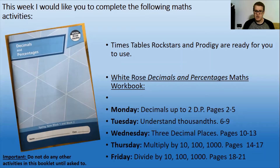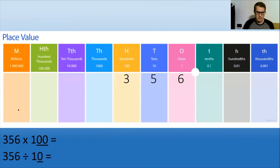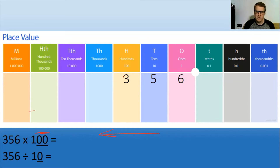For Thursday and Friday we're going to be multiplying and dividing fractions and decimals. I just want to do one example which is up on the board now. We're going to be using a place value grid. For example, if we had 356 times 100, we would be moving our numbers. We've got two zeros and we're multiplying, so our numbers are going to get bigger, meaning we move this way because bigger numbers are at this end of our place value grid.